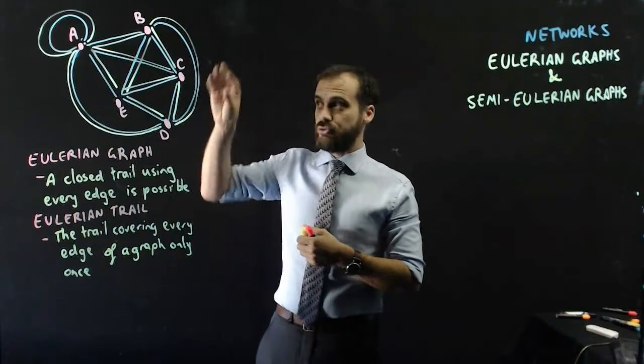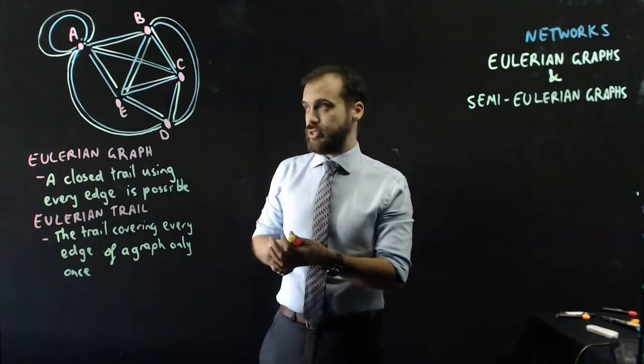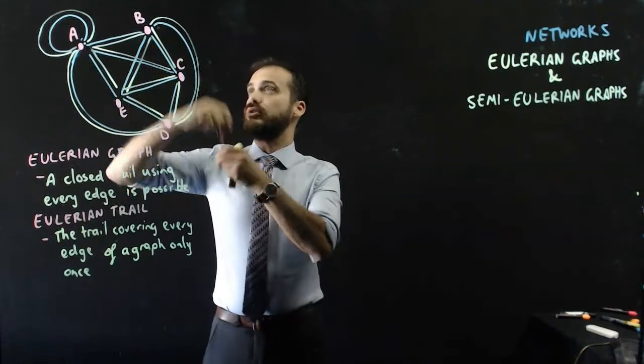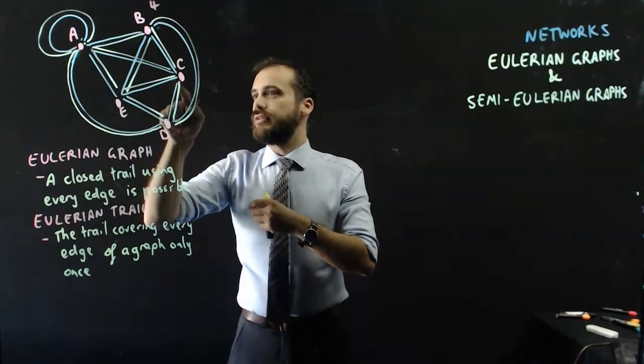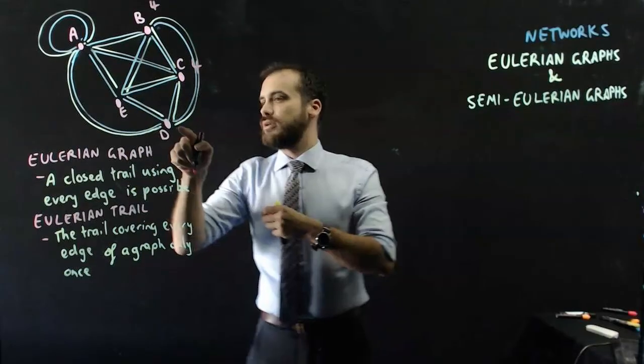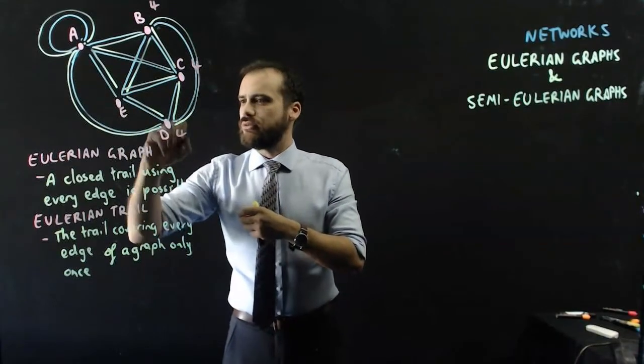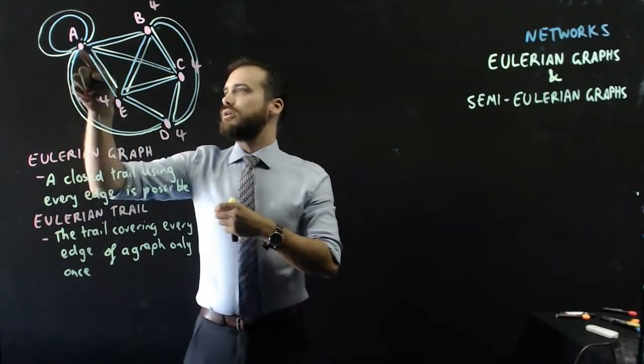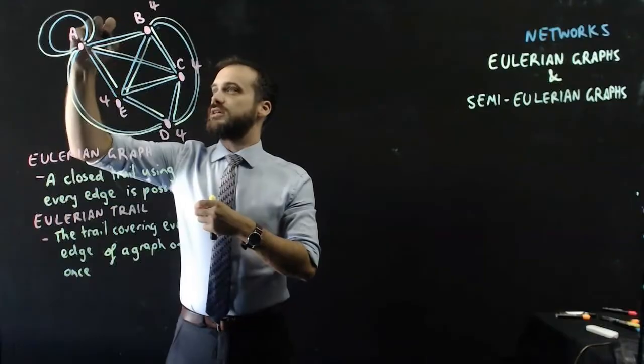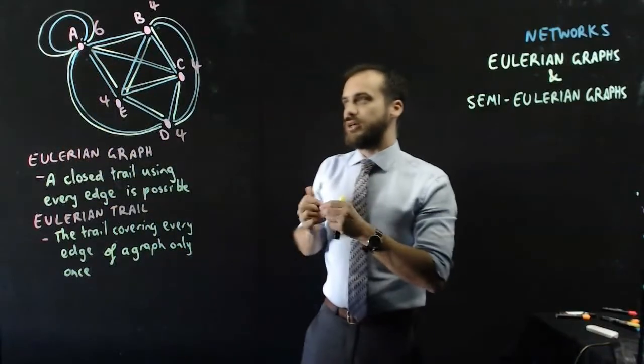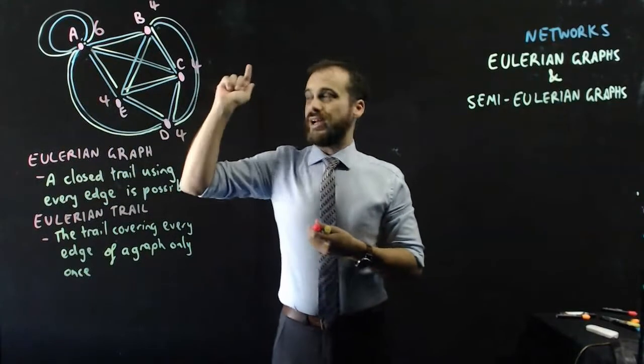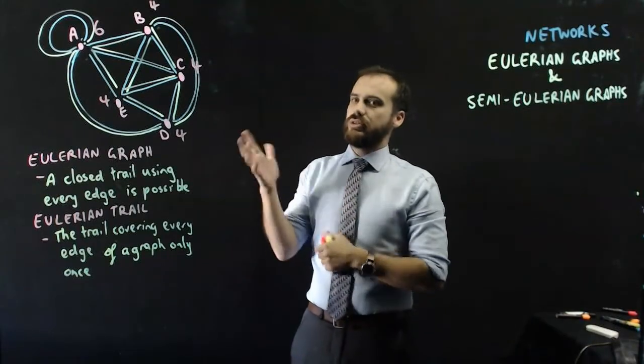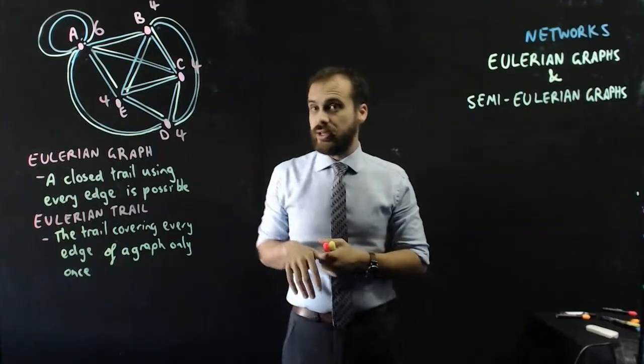Well it's really simple. Look at all of the vertices and think of what the degree is of each of those vertices. So this one: 1, 2, 3, 4; 1, 2, 3, 4; 1, 2, 3, 4, 5, 6. Okay, 4, 4, 4, 4, and 6. Now it's got nothing to do with the number 4 in particular, it's got nothing to do with the number 6 in particular.